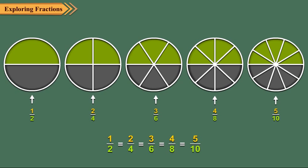It means the fractions represented by these shaded portions are equal. Thus, one upon two is equal to two upon four is equal to three upon six is equal to four upon eight is equal to five upon ten. And we call one upon two, two upon four, three upon six, four upon eight and five upon ten as equivalent fractions.